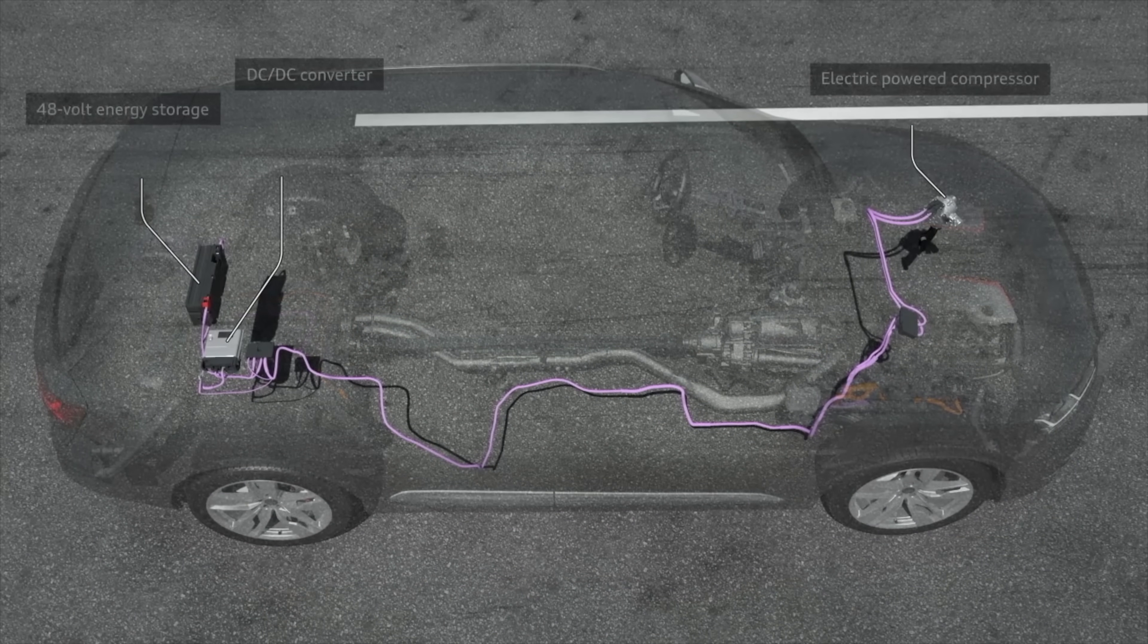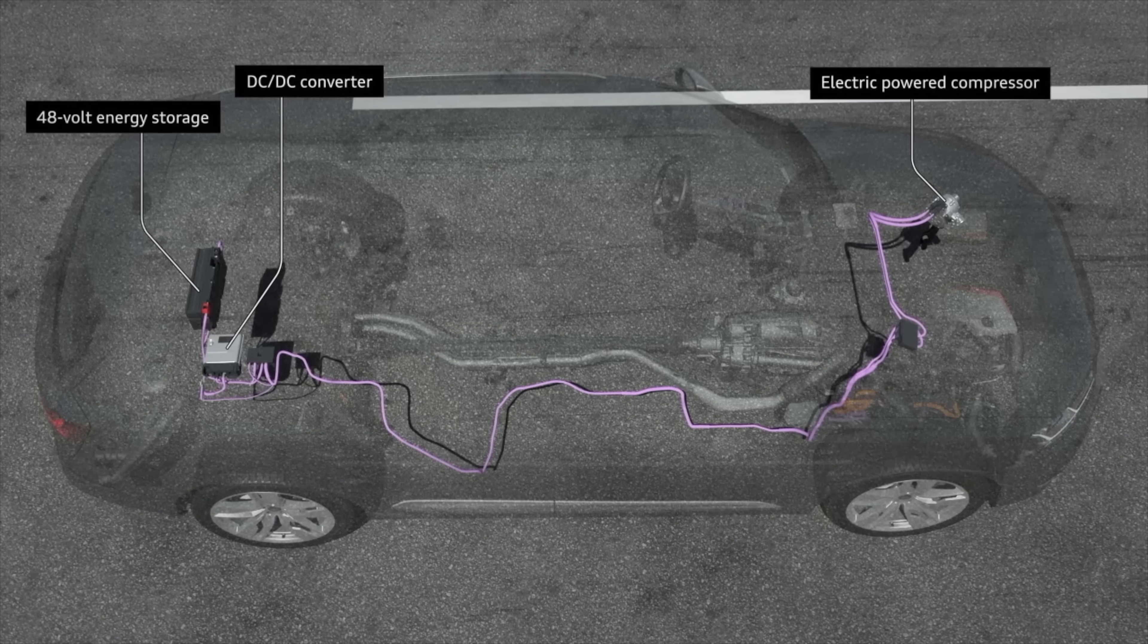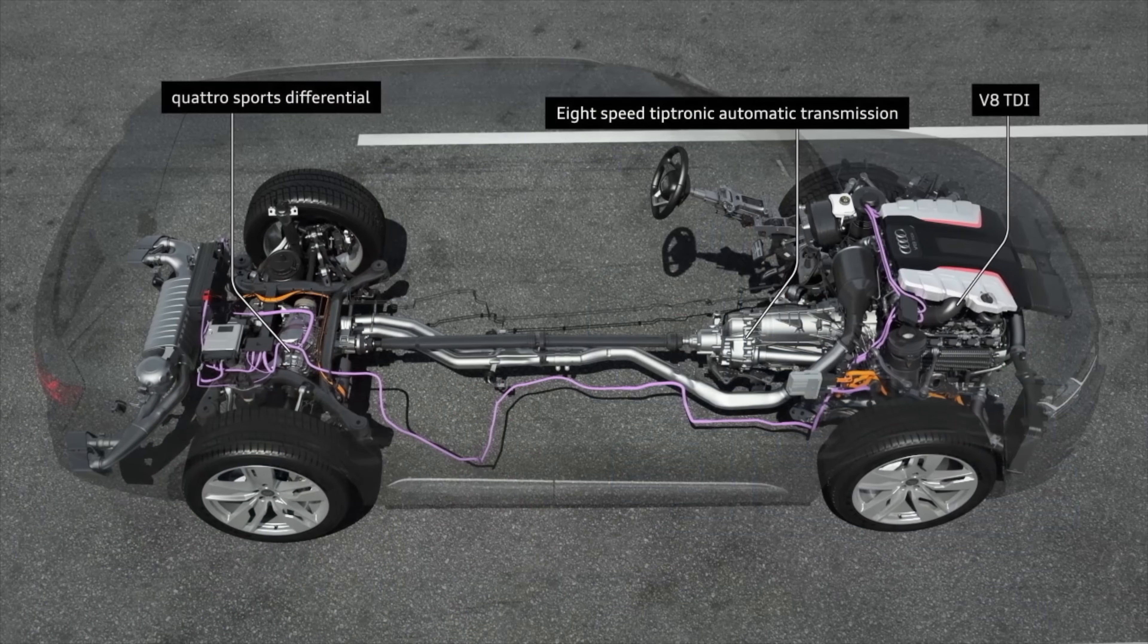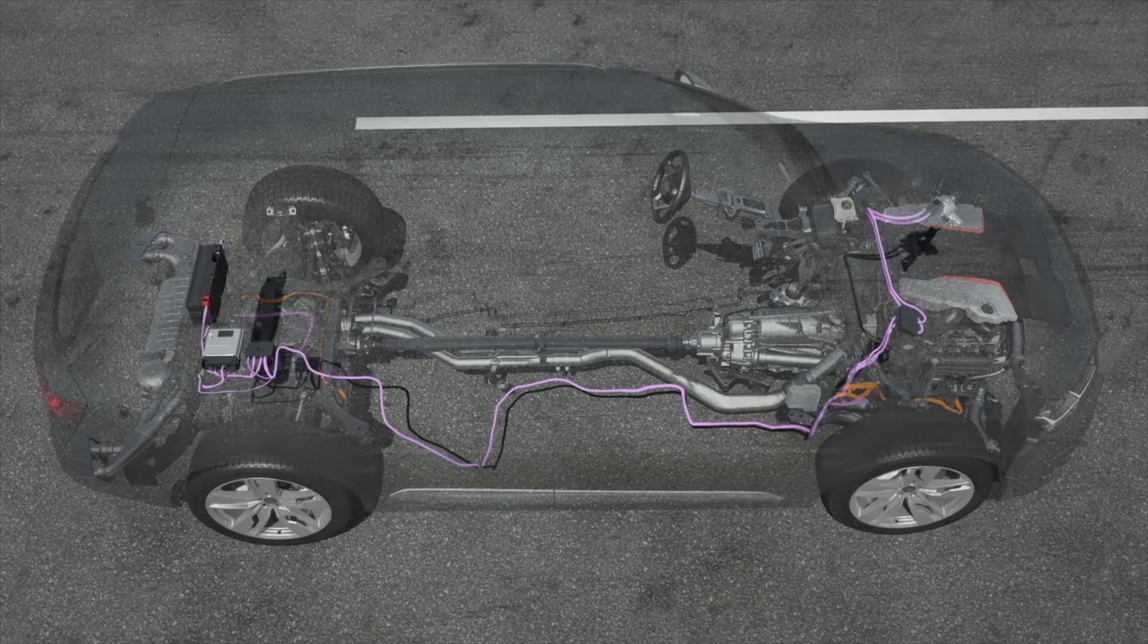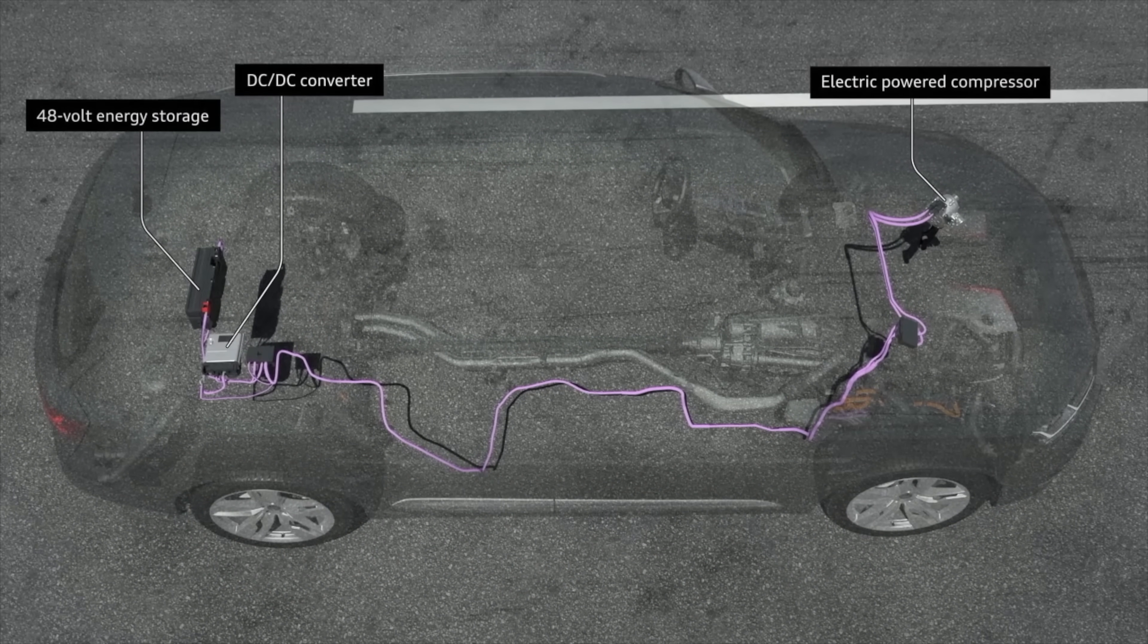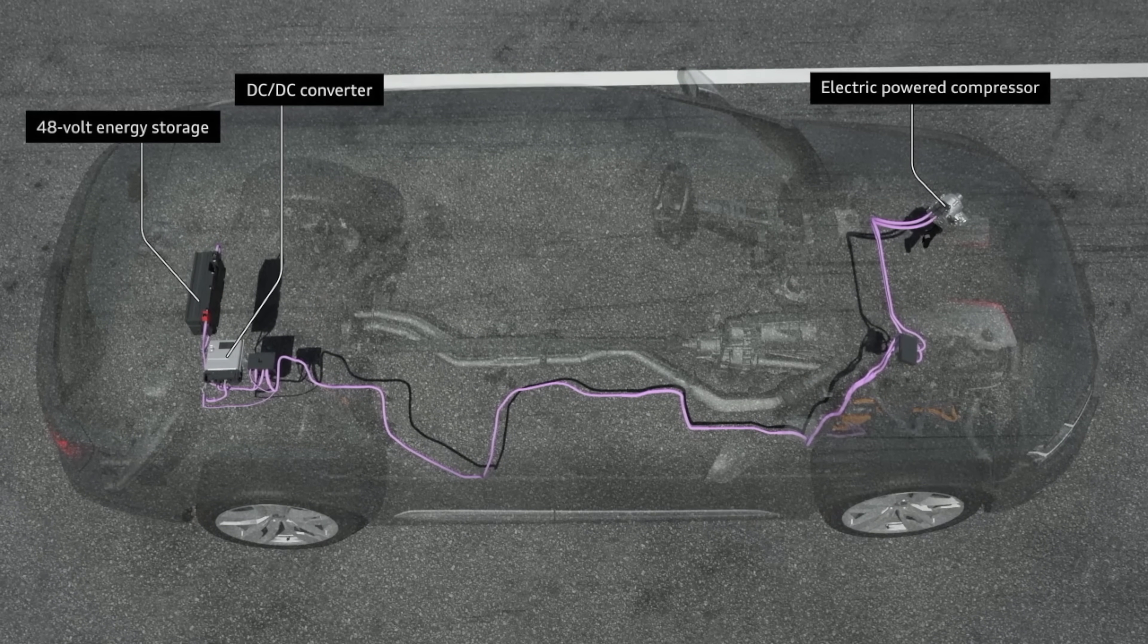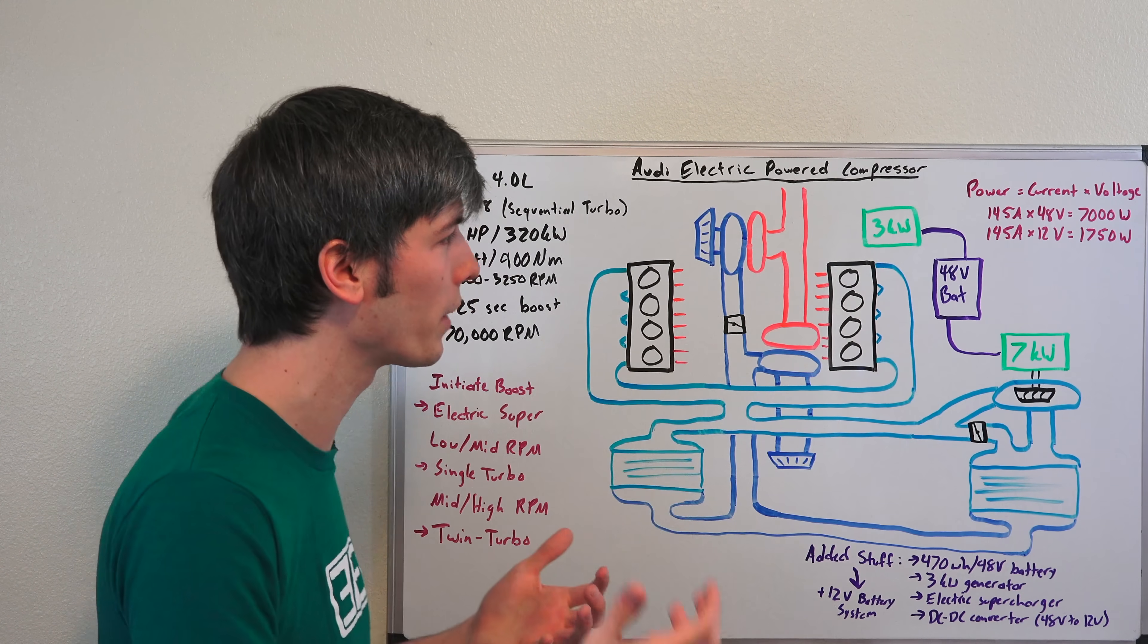So that's why Audi has added this separate 48 volt system, and this means adding a lot of stuff to the engine. This is why it's not done on every car out there, it's because it's expensive, and it's of course complicated to do. So you're adding a generator to the system, you're adding a 470 watt hour 48 volt battery to the system, you're adding that electric supercharger to the system, and all the associated piping that goes along with it, and you're also adding a DC to DC converter, 48 volt down to 12 volt for other onboard systems, and this is all in addition to the 12 volt battery system that's already on the car.